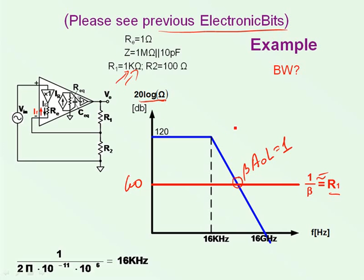For region below this crossover point, beta A is larger than one. And for this region, beta A_OL is smaller than one.